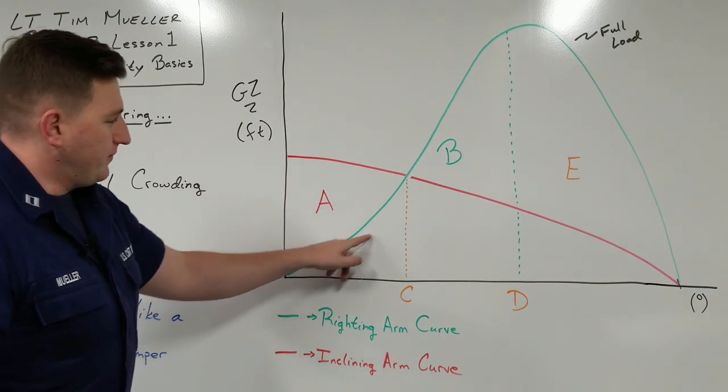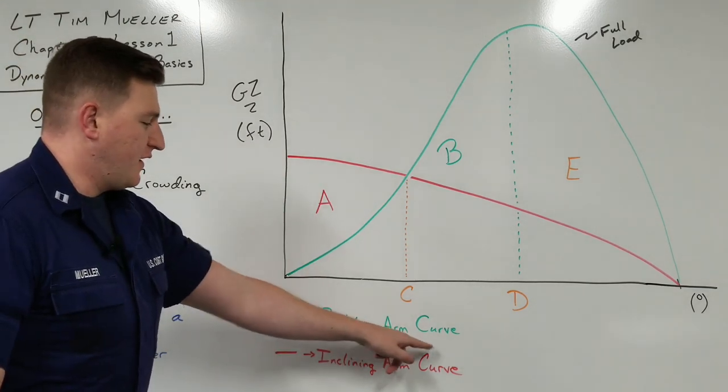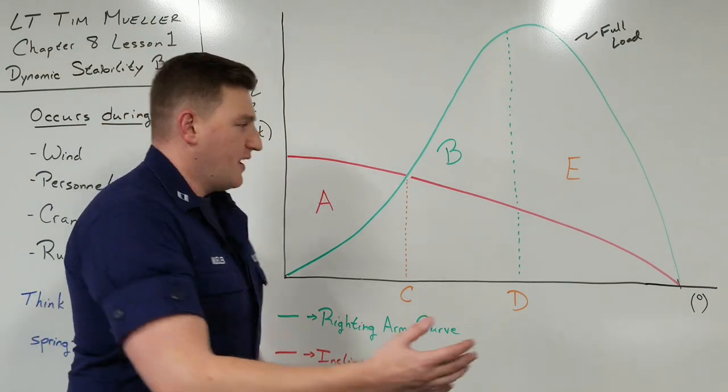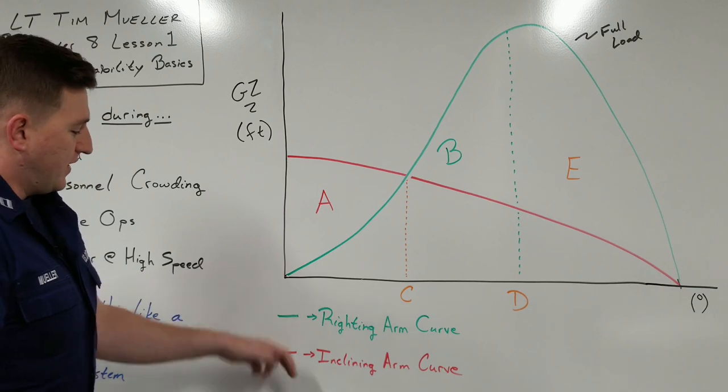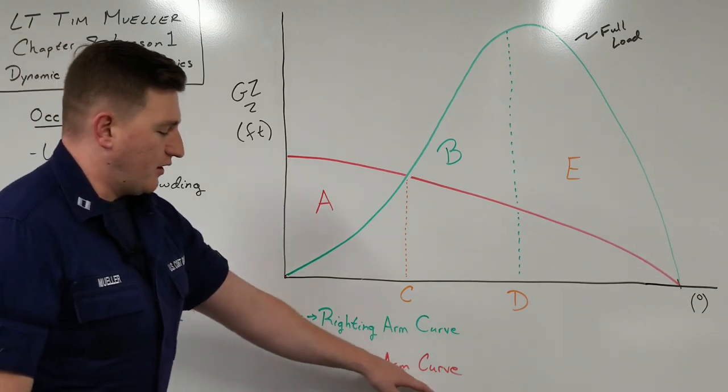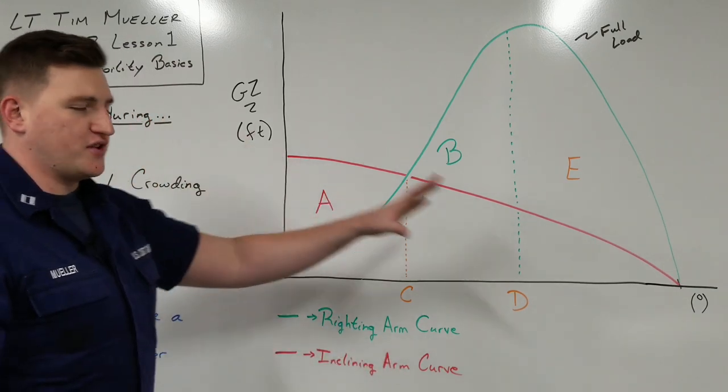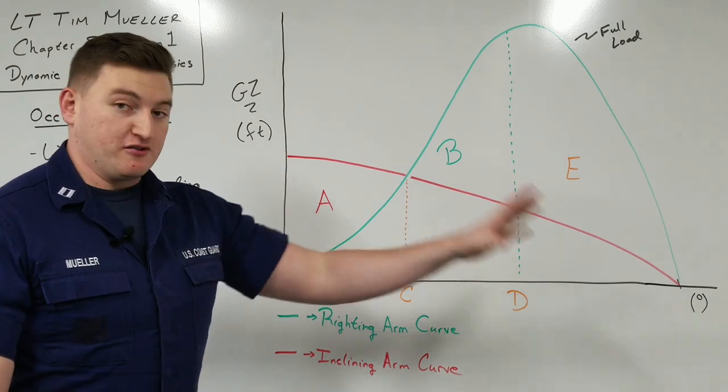So in green, we have this righting arm curve, and that is all the righting arms and all the energy that's trying to right the ship back to, in this case, even keel. And then red, this inclining arm, is everything that's trying to push the ship over to 90 degrees and capsizing.